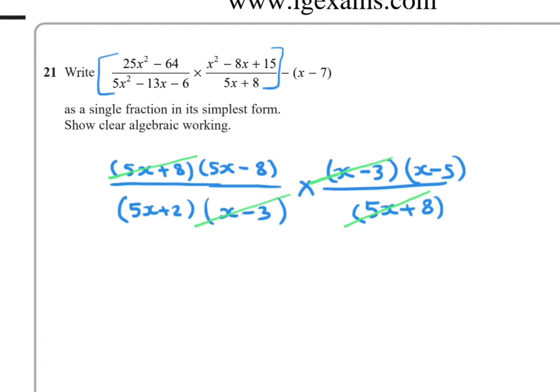So you are left with (5x - 8)(x - 5) over 5x + 2. Now we can subtract minus (x - 7).